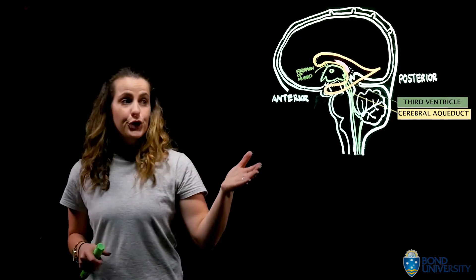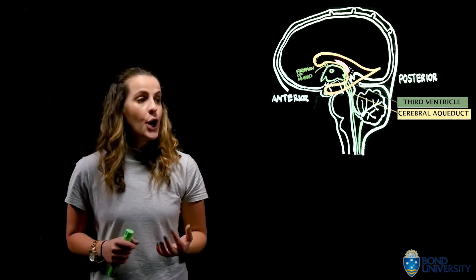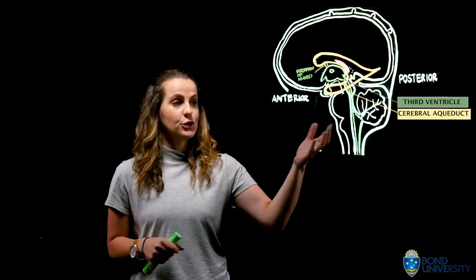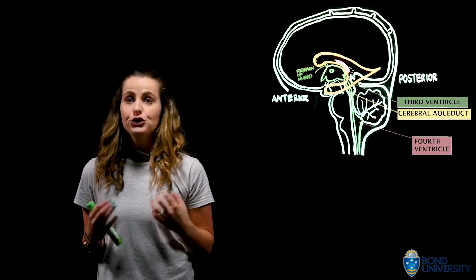As I've drawn on from the cerebral aqueduct, CSF then passes into the fourth ventricle, which is going to be located between the cerebellum and the pons. From here, CSF can then be distributed two ways.